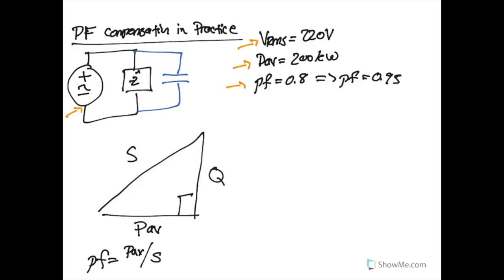In our current situation, we have some phase angle due to the current setup. But the hope is that when we take Q₀, this original reactive power, and we add a capacitor, we can actually move this line down.